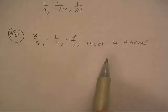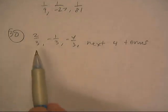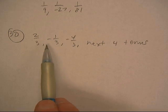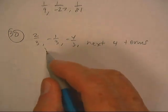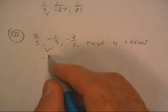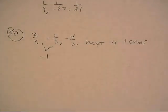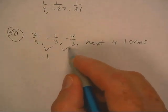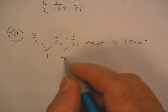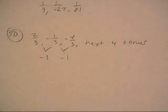Okay, very good. We want the next four terms on this one. Notice from two-thirds, we drop to negative one-third — we went down one. And then from negative one-third, we go to negative four-thirds. We went down one again.